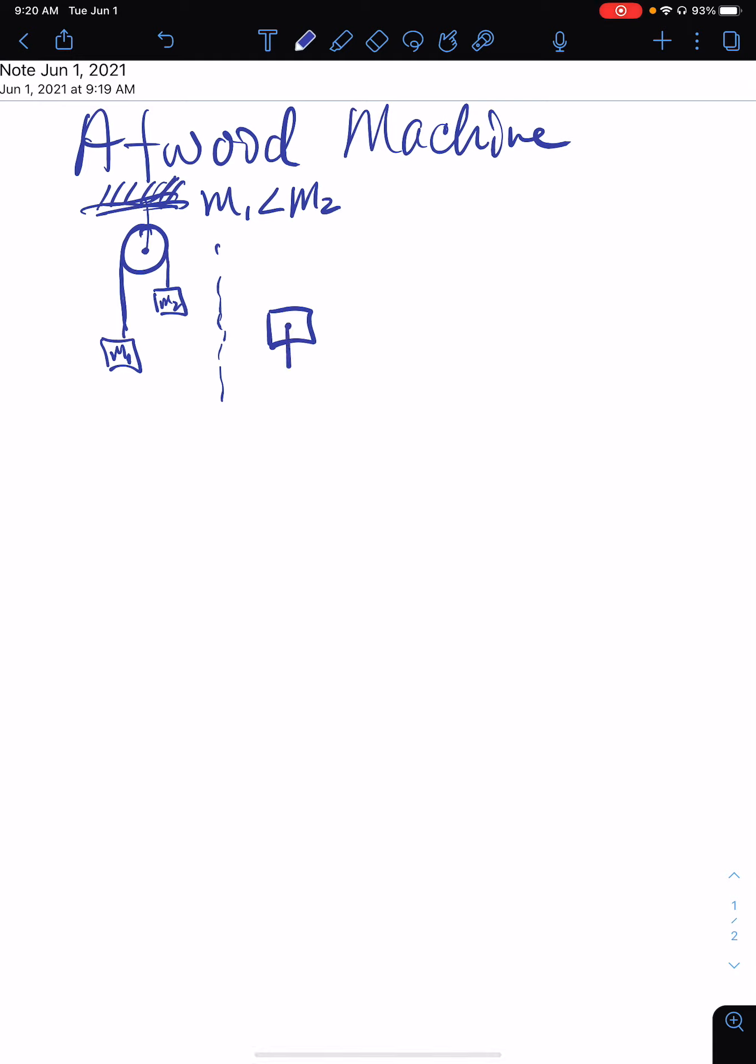There's m1. m1 has the force due to gravity pulling it down and tension pulling it up. There are no forces happening horizontally. So the sum of the forces on m1—we know it's accelerating, so the sum of the forces could be ma.